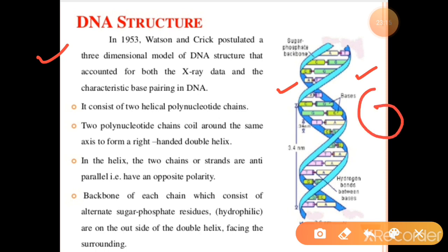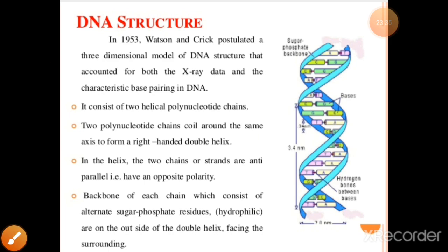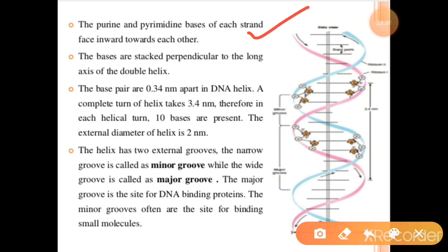To summarize the Watson-Crick DNA structure: DNA has two chains coiled around a common axis in a right-handed, clockwise direction. Two strands are anti-parallel — if one strand is 5' to 3', the other is 3' to 5'. The backbone is sugar-phosphate. Nitrogen bases are inside. Base pairs are 0.34 nanometers apart and one complete turn is 3.4 nanometers.